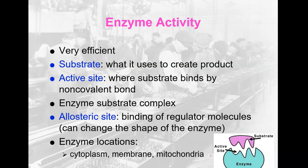A little bit of enzyme can produce a lot of product. The substrate is what it uses to create the product, and the product is what is produced. Depending on the enzyme and the direction of the reaction and the amount of substrate or product, the reaction could go one way or the other. You could have multiple substrates — two substrates being joined together to create one product, or one substrate being pulled apart to create two products. It just depends on the direction and rate of the reaction.